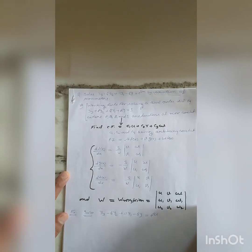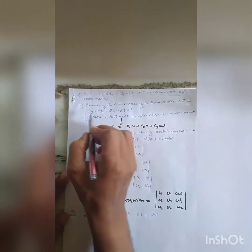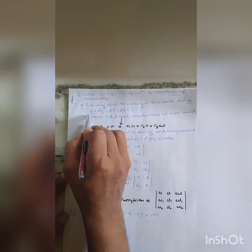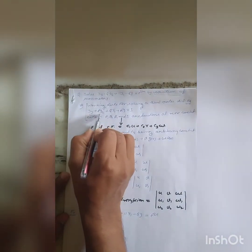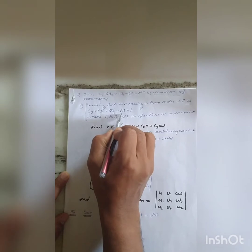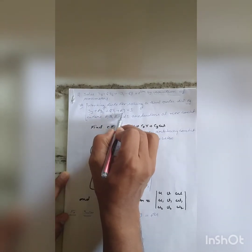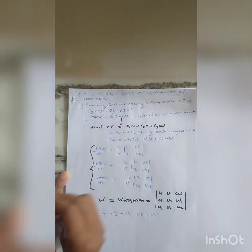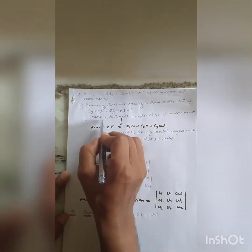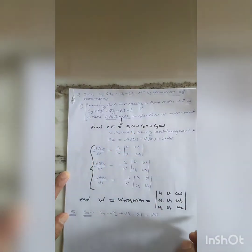The working rule for this type of differential equation is: suppose we have the differential equation y''' + p·y'' + q·y' + r·y = s, where p, q, r, and s are functions of x or constants.